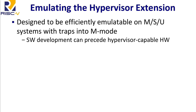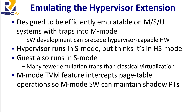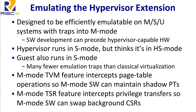One of the cool parts of this design is that the hypervisor extension is designed to be efficiently emulatable even if you don't have the hardware. If you have a system implementing only machine, supervisor, and user modes, you can implement the entire hypervisor ISA by trapping into M mode and emulating a small number of instructions and CSRs while maintaining shadow page tables. We added hooks to machine mode — allowing you to trap any instance of sret, sfence, and so forth — so machine mode software can handle shadow paging without trapping all memory accesses to the page table, as you would in a conventional approach.